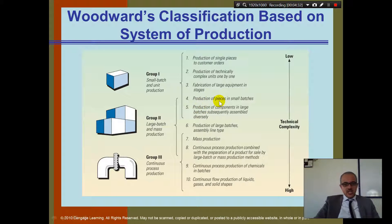Number 4, here it says production of pieces in small batches. So maybe you want to produce 2 at a time. A customer come, order 2, you produce 2. Customer come and order 10, you make 5 and 5, because that's the maximum your equipment can handle. Number 5, it says production of components in large batches, subsequently assemble diversely. So here you produce them in more larger batches. Maybe you produce 10, 10, 10, 10. So here we're moving to a large batch.